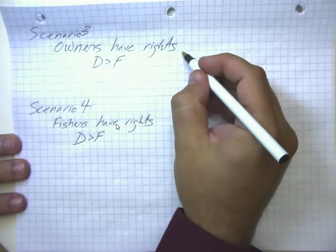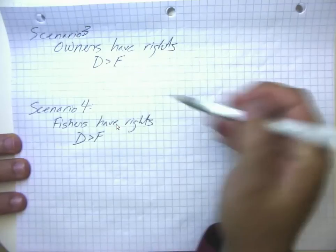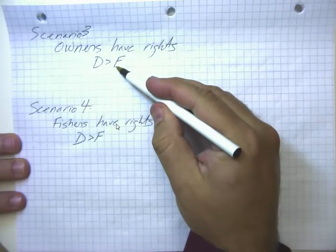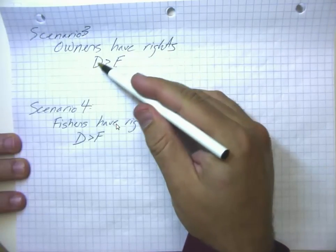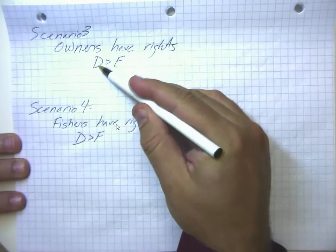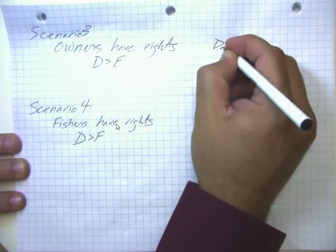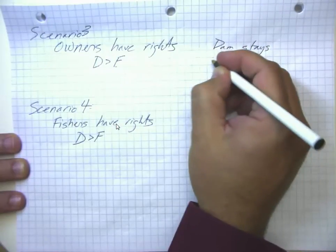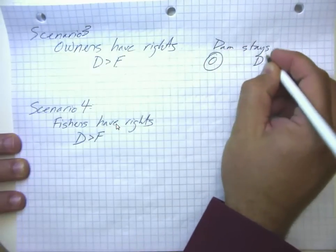So in this case, if the owners have rights, and if F is less than D, then there's no price that the fishers are going to be able to pay the dam owners that is going to compensate the dam owners for their loss of profits. So in this case, the dam stays, and the fishermen get zero economic welfare and the dam owners get D.